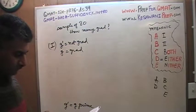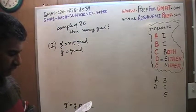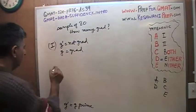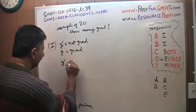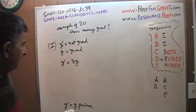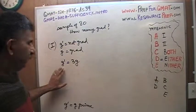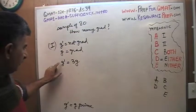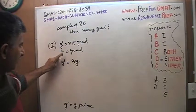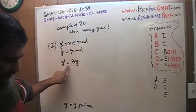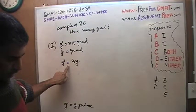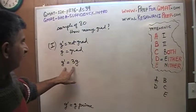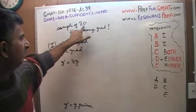The first statement tells us that in the sample, the number of adults who are not college graduates is three times the number of adults who are college graduates. So the equation is: G' = 3G. The question is: is this information enough to figure out how many graduates must have been in a sample of 80?